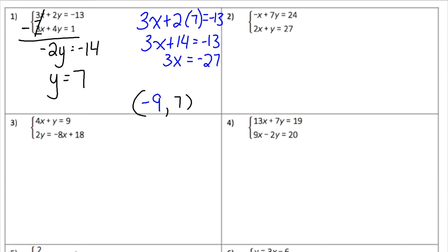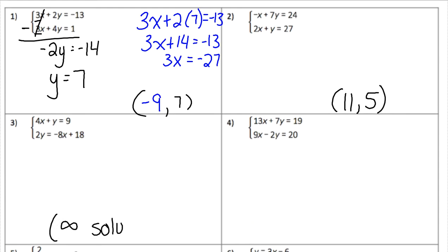I'm just going to give you the answers for numbers 2 and 3 so you can check your work. Number 2 comes out to 11, 5. And number 3 should come out to infinite solutions — those ones, when you multiply and rearrange them, come out to be exactly the same equations.